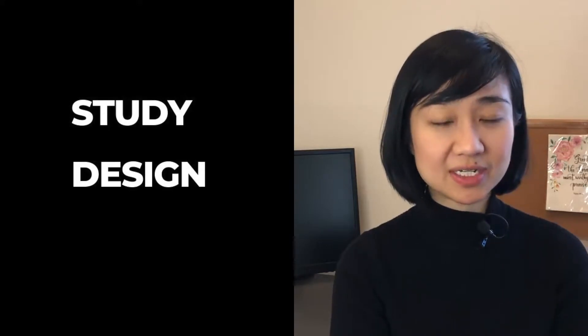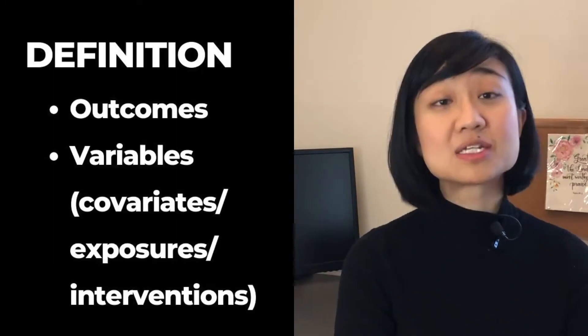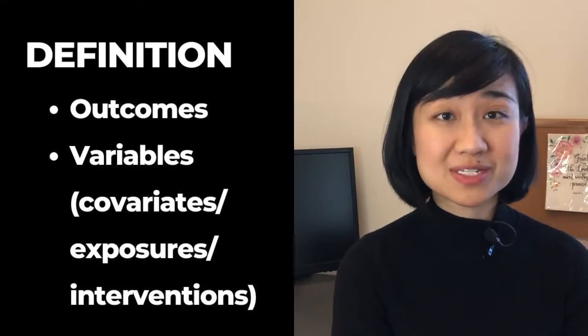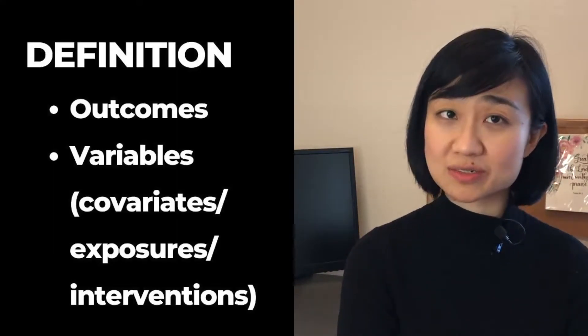The study design: specifically describe whether it's a cross-sectional study, a cohort study, or a randomized controlled trial. Next is the definition section, where you describe the different outcomes, covariates, exposures, or interventions, and justify why you chose certain variables.